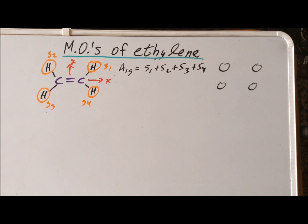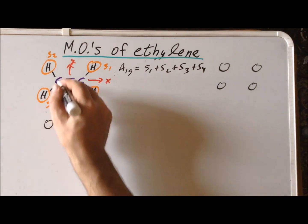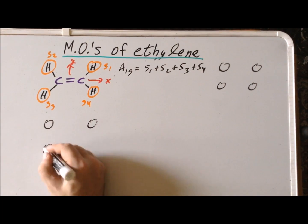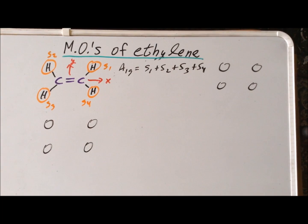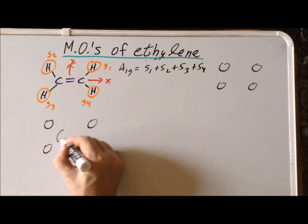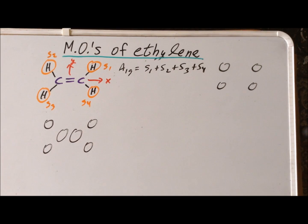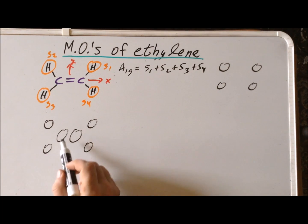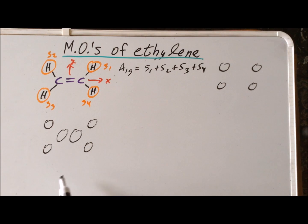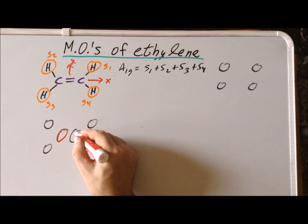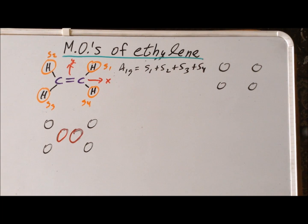For A1g, we have two different combinations of carbon atomic orbitals with both the right symmetry and energy. The first is the two s orbitals on carbon — bonding with respect to each other and bonding with respect to the hydrogen atoms. This is the combination of the two s orbitals on carbon to form A1g.